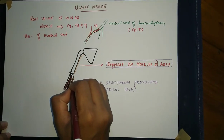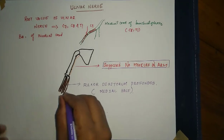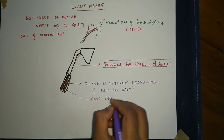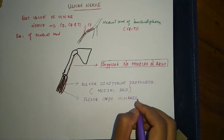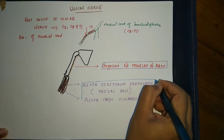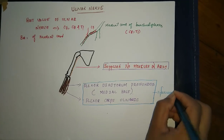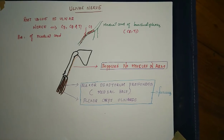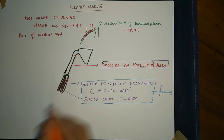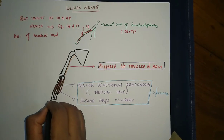The ulnar nerve also supplies another muscle in the forearm — the flexor carpi ulnaris, which is a wrist flexor muscle.